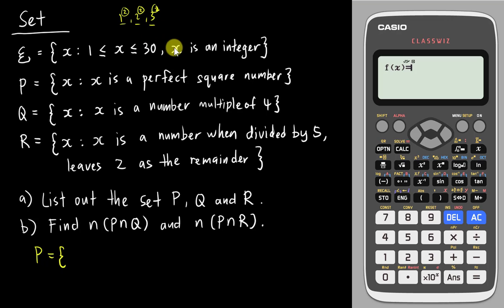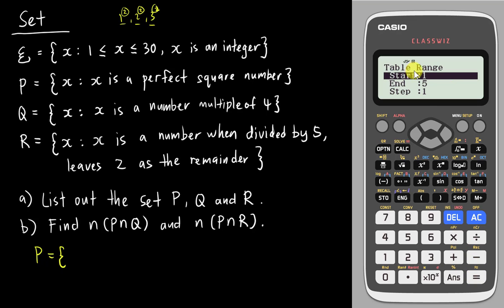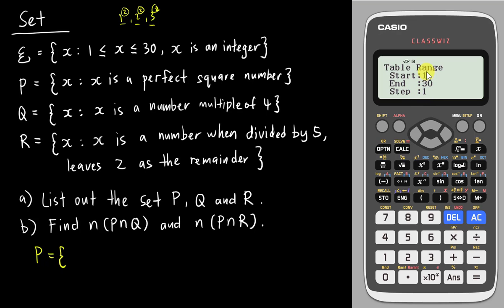Because the perfect square has square as a constant and 1, 2, 3 as variables, I use X to represent it and type X squared. For the table range, I set start to 1 and end to 30 so I don't get any number bigger than 30. I set the step to 1, because I want X to go 1, 2, 3 in sequence. Then I press enter.